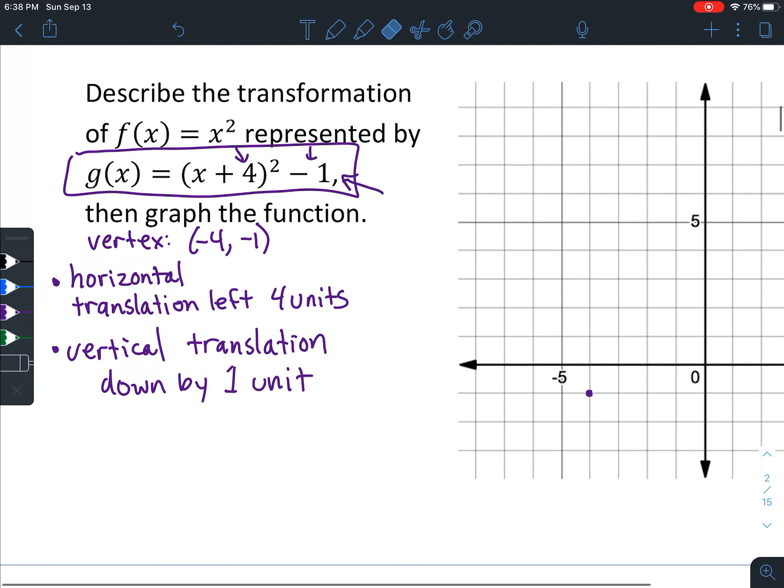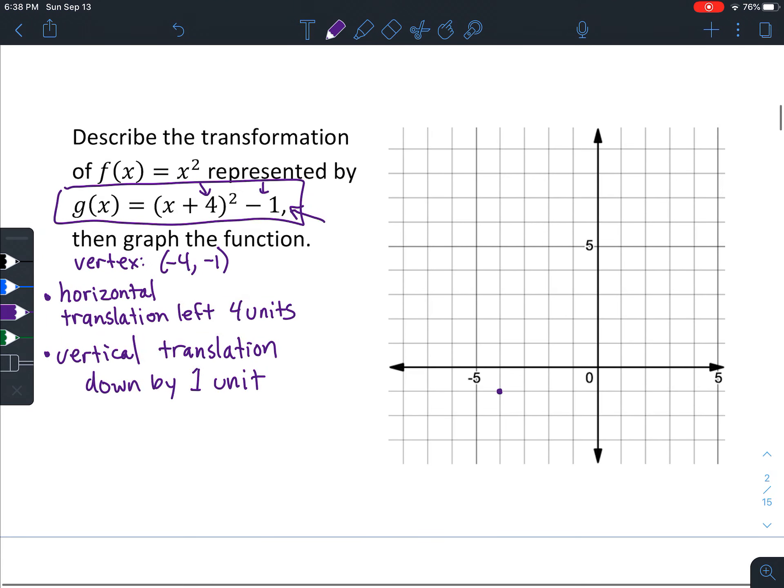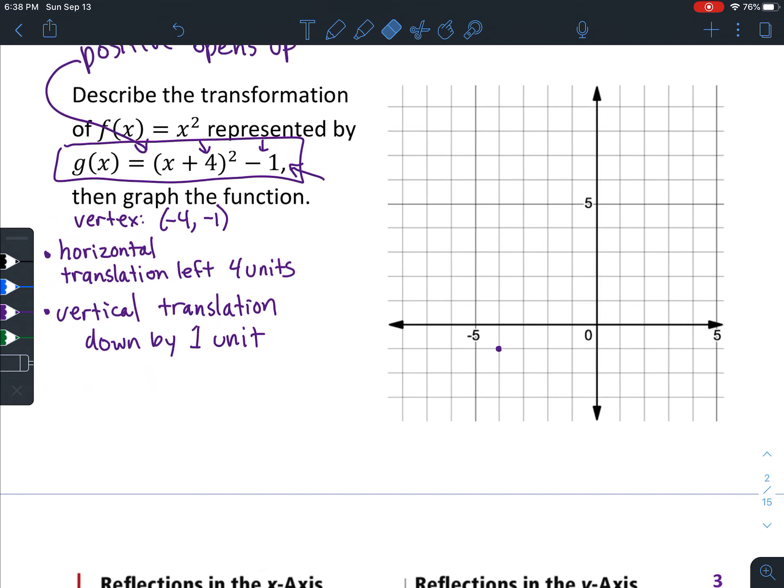Now we know approximately there are a few other things that we know. Because this is positive, we know that it opens up. So we know it's going to be a shape kind of like this. But if we want to be a little bit more accurate, we're going to graph just a couple of points. So the points that might be important to graph, the input that's right there would be negative 3.